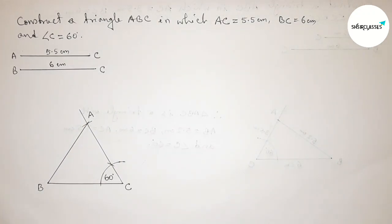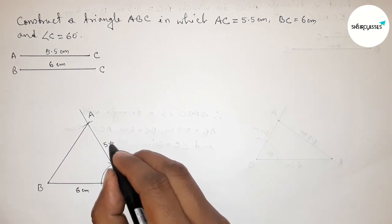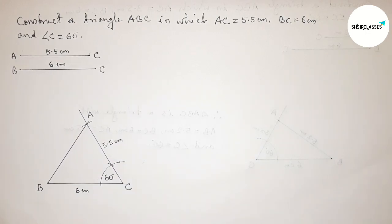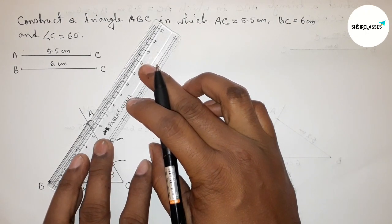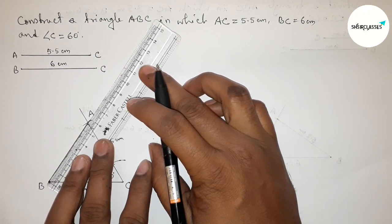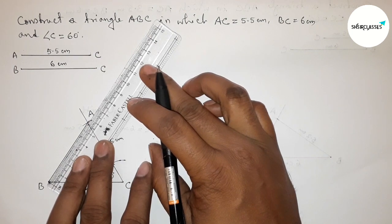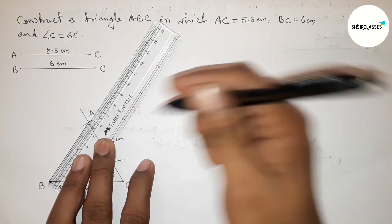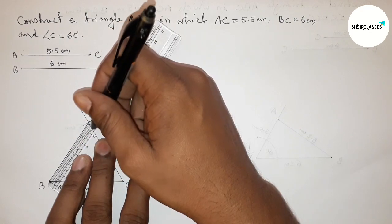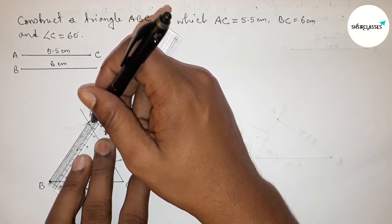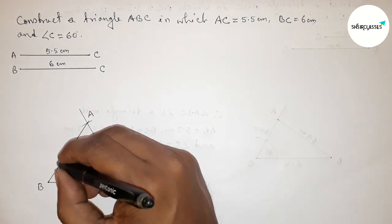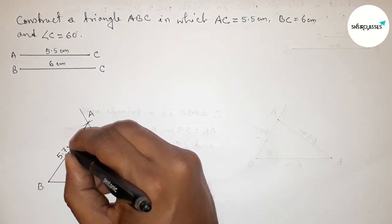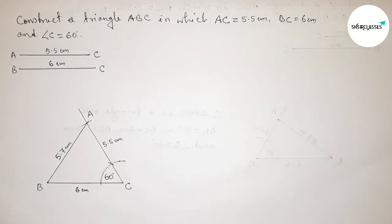So here this is 6 centimeter and this one is 5.5 centimeter. Now measuring the side of AB. So this is approximately 5.7 centimeter. So AB equals 5.7 centimeter approximately.